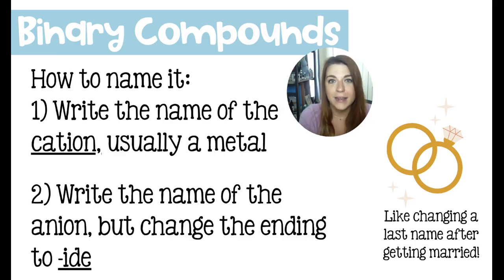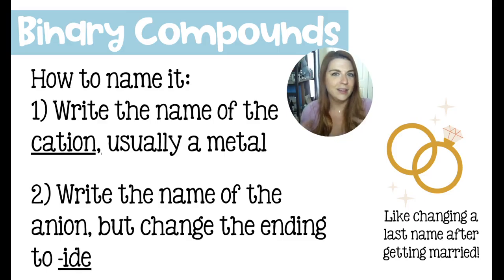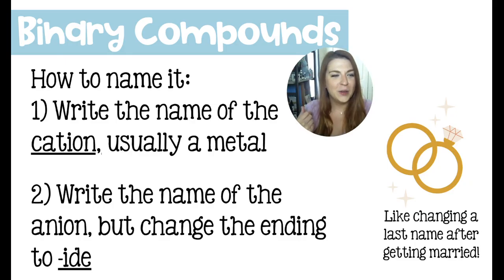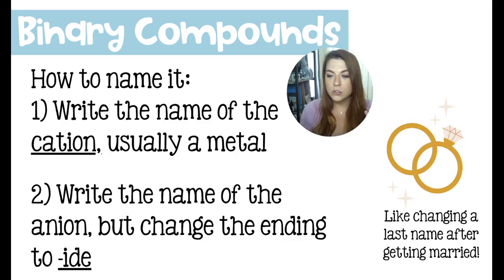You may have heard of fluoride in your toothpaste — that means you have a compound where fluorine is bonded to something else, turning it into fluoride. I like to think of this as the two elements getting married. The cation gives electrons to the anion, kind of like in a classic situation where the man gives the woman an engagement ring, and then she changes her name. The anion changes its name — it gets married and changes its ending to -ide to indicate that it's now bonded.